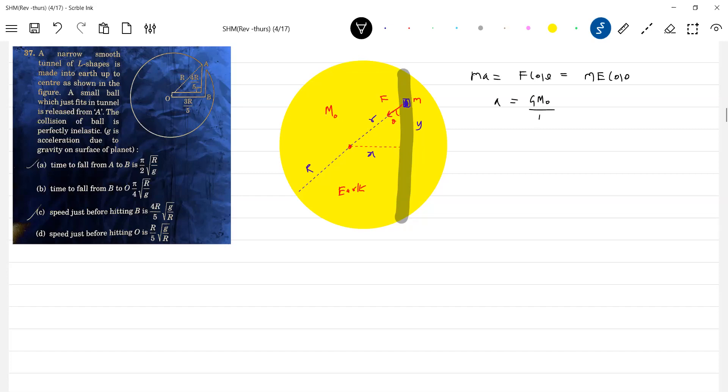So e is what? g m0 r cube into smaller, gravitational field strength inside the solid sphere. Cos theta cos theta will be y by smaller, that will get cancelled. g m0 by r cube and always that acceleration opposite to displacement. So therefore the time period is given by 2 pi. Better do remember, or this will become 2 pi r square, so this will be r by g.